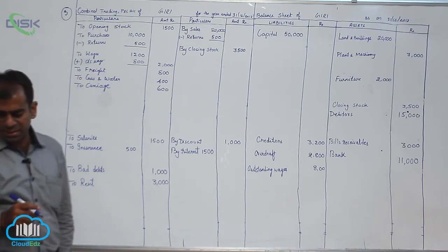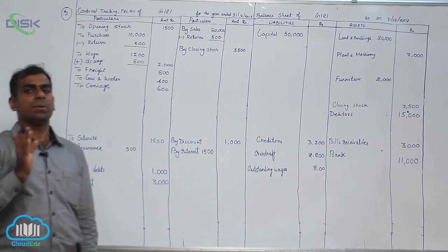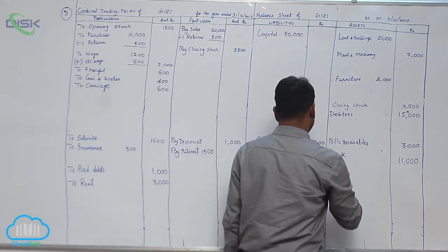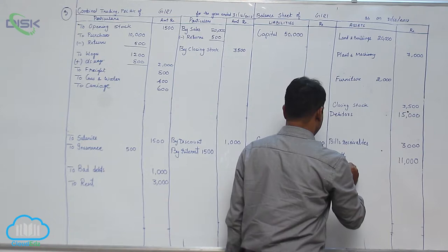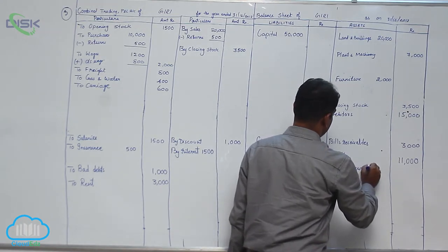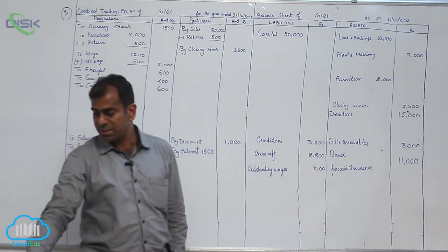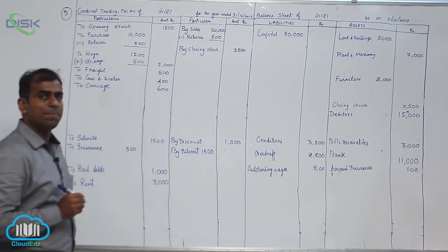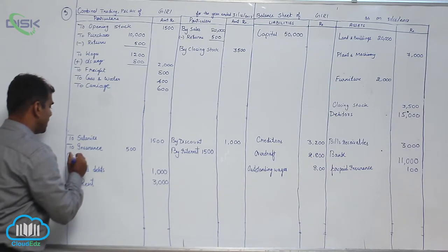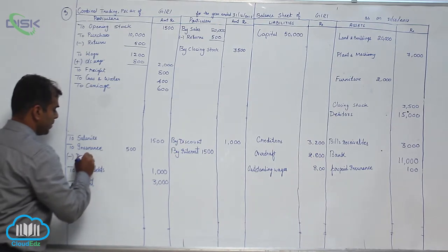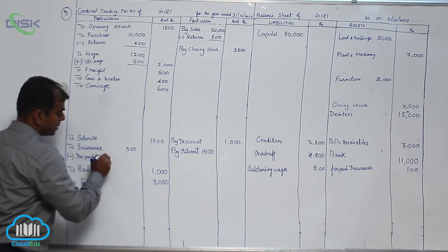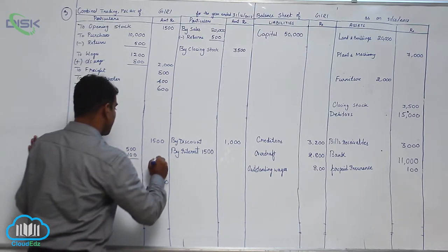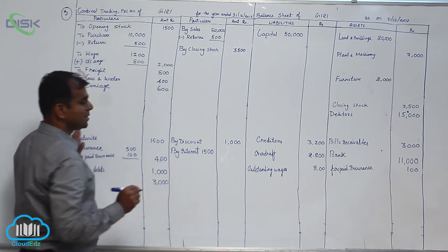The next adjustment is prepaid insurance. Insurance is an expense, but prepaid expense given in adjustment is an asset. First we write it in balance sheet - prepaid insurance 100. The second effect is we have to deduct it from insurance in P&L because if you refer to the table it says minus prepaid insurance, the amount being 100, making your expense on insurance for the year 100. That means 100 is next year's.